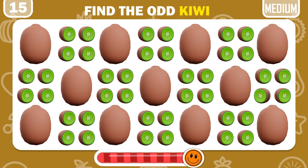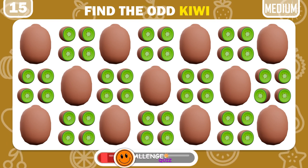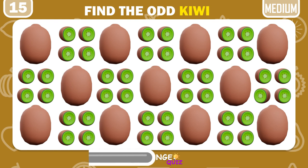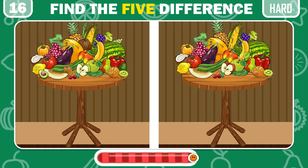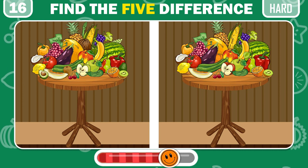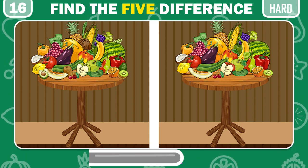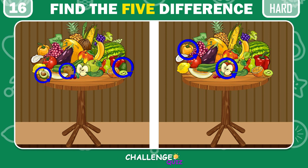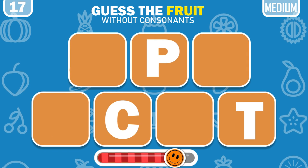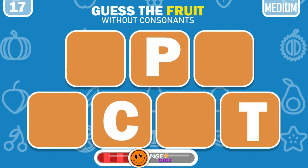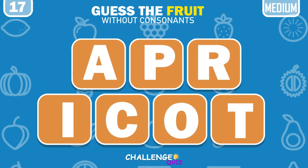Now try to find the odd kiwi emoji out. Find the 5 differences here. These are the differences. Now try to guess the fruit name without its consonants. Amazing, it's the tasty and healthy apricot!